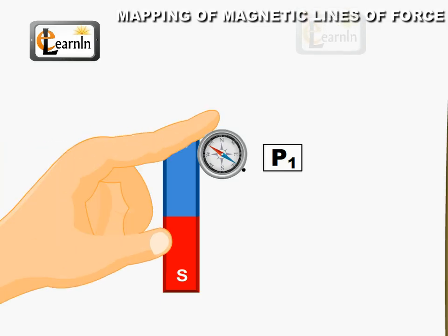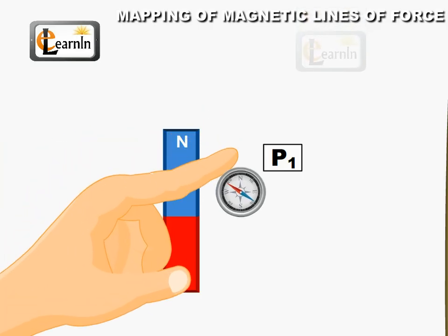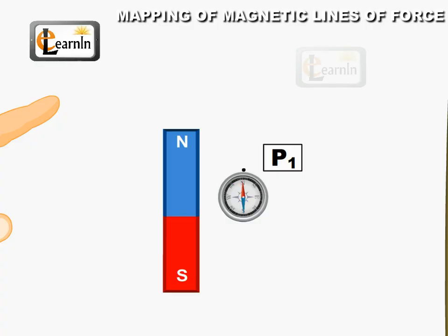Now, move the plotting compass in such a way that the south pole of the plotting compass is in alignment with P1 and again mark the second point, P2, shown by the north pole of the plotting compass.